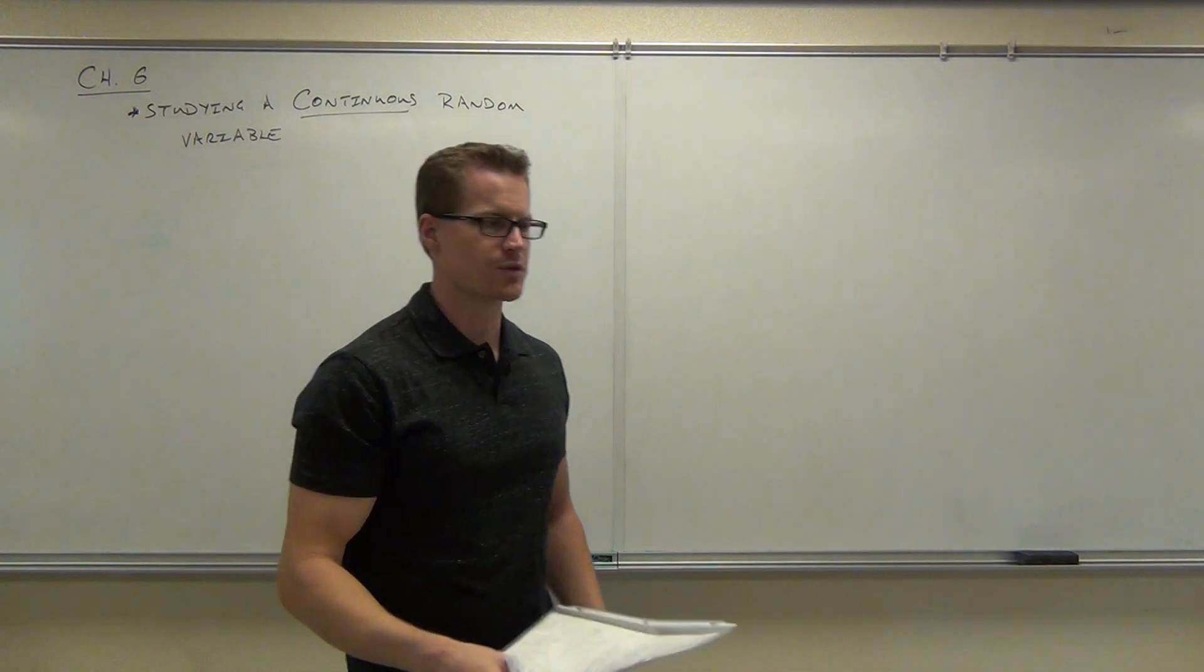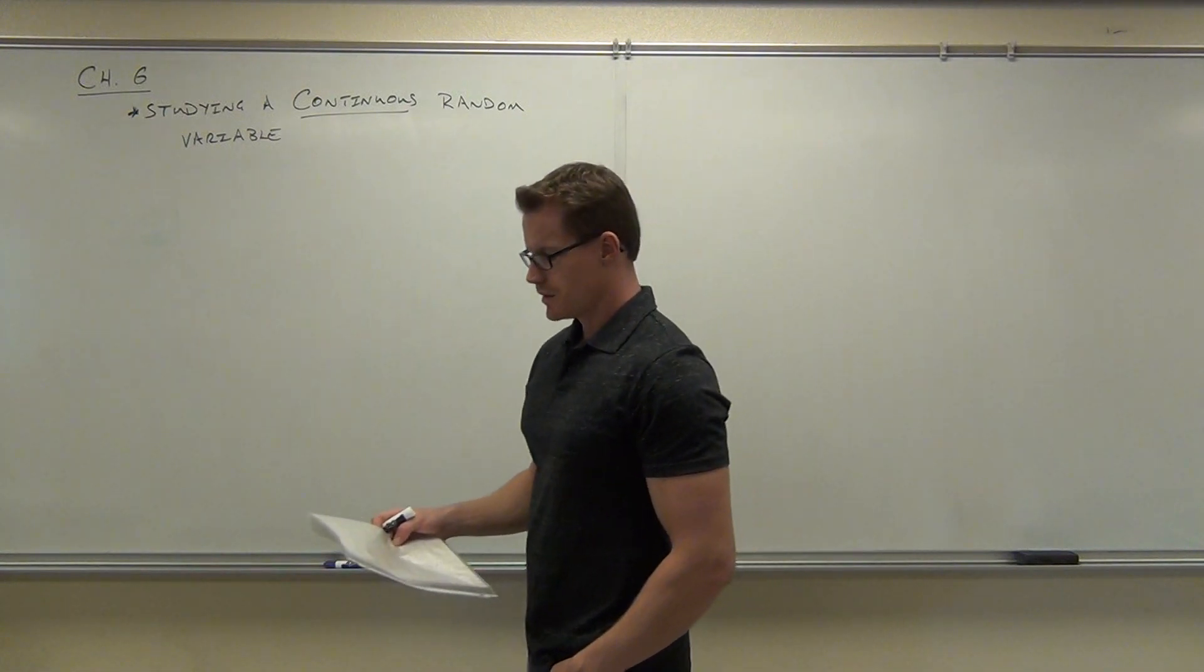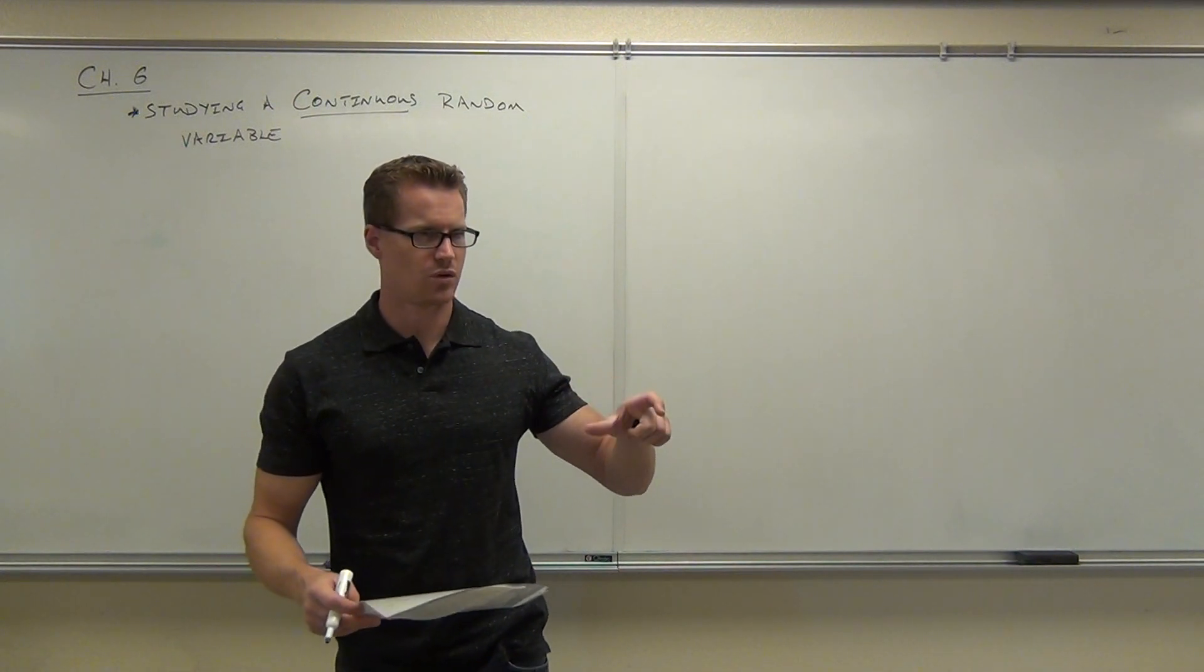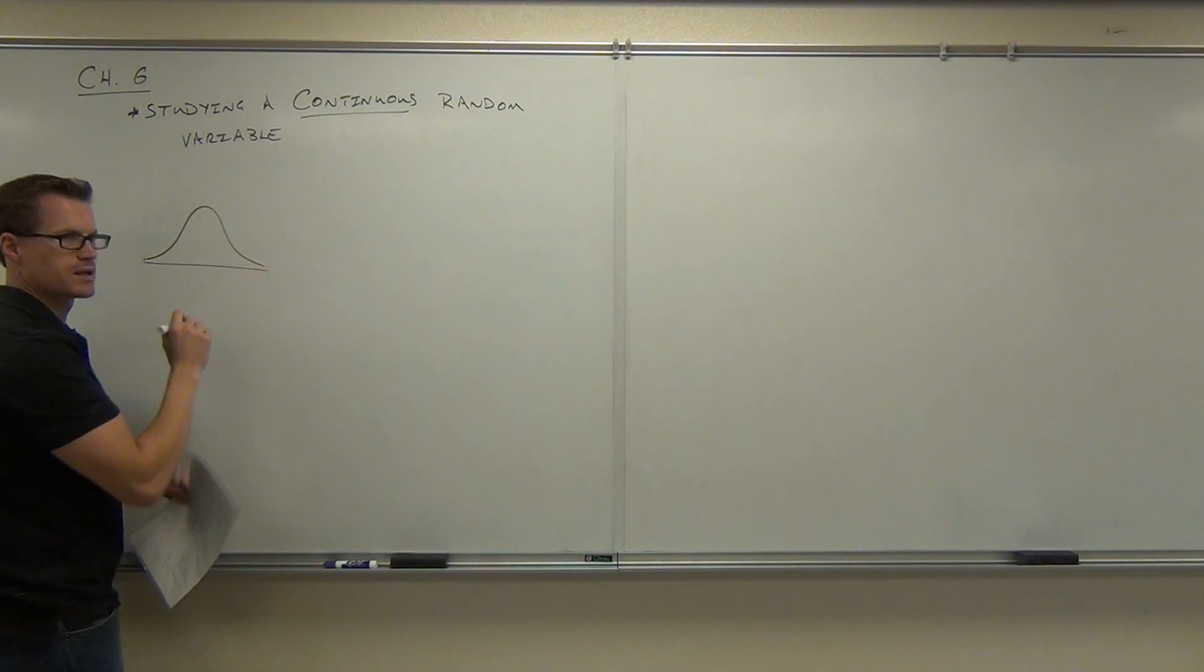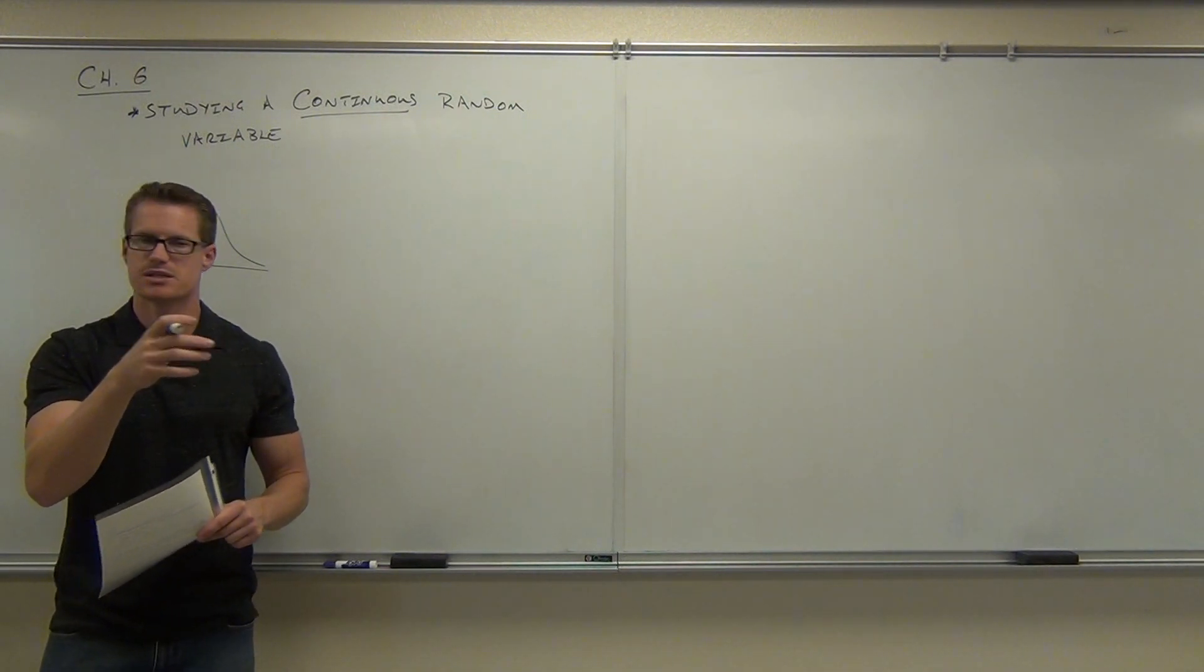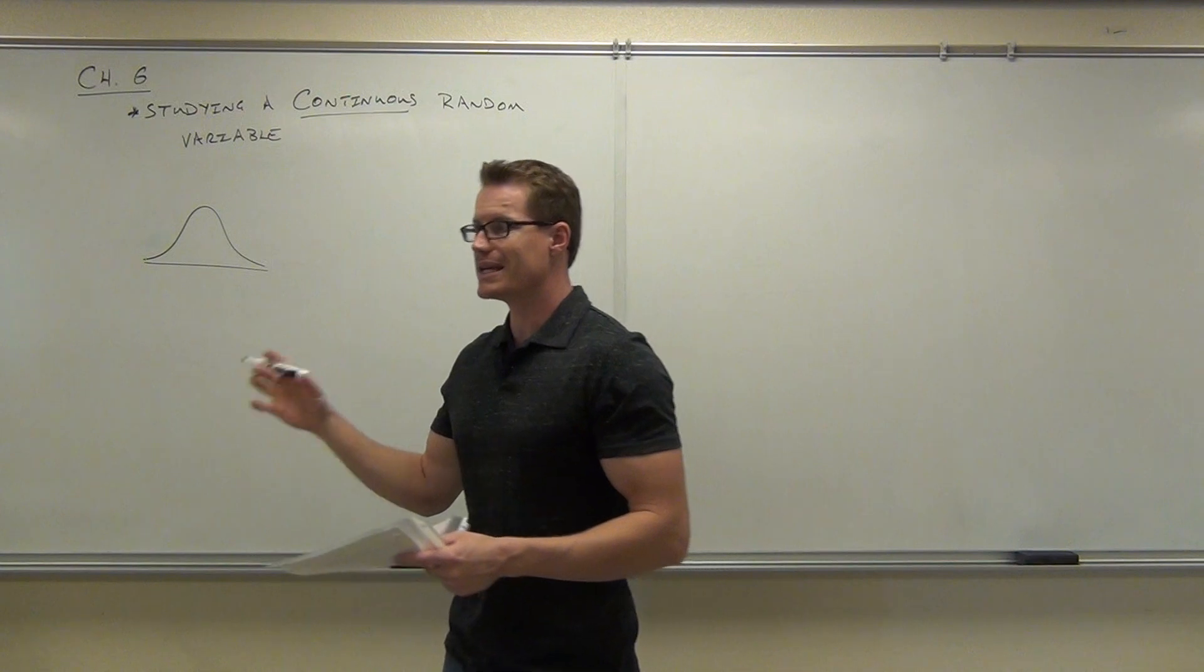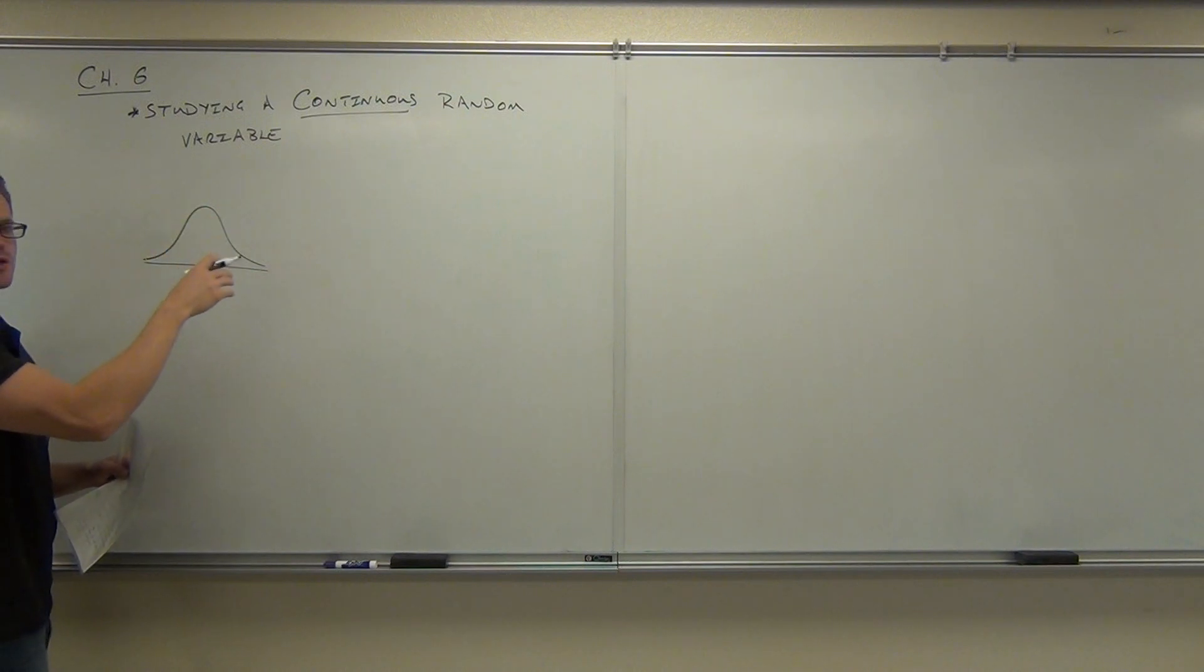First thing, before we actually get into continuous random variables, I've got to tell you that if the continuous random variable has a symmetric bell-shaped curve - do you remember what the symmetric bell-shaped curve was called? Normal distribution. Called it normal. That's exactly right. So if we have a normal distribution or a bell-shaped curve, that's really what we're looking for in our Chapter 6, is something that's normally distributed. If we don't have a normal distribution, none of this stuff really applies. So what we need out of this section, out of this chapter, is for our continuous random variable to have a symmetric bell-shaped curve, otherwise known as a normal distribution.